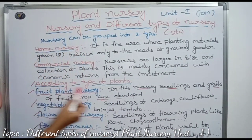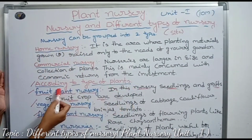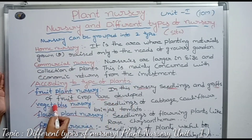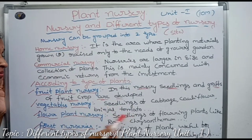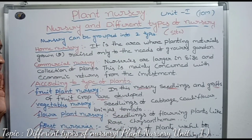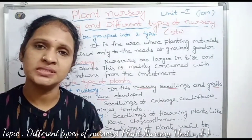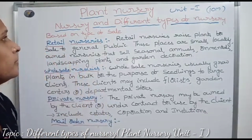To summarize: fruit nursery develops fruit plants, vegetable nursery develops vegetables, flower plant nursery develops flowers, and forest nursery develops forestation plants such as oak, pine tree, and eucalyptus trees.